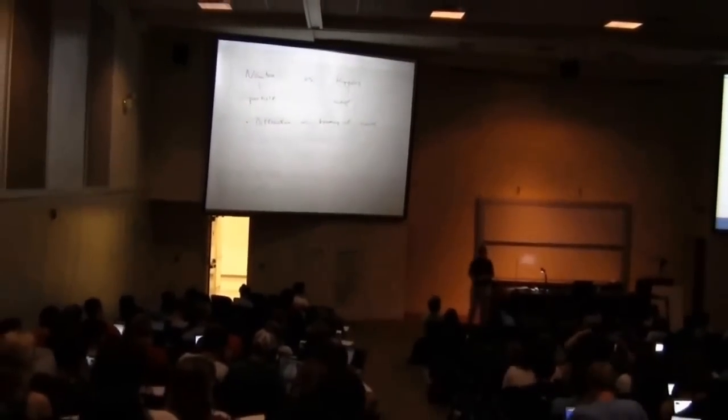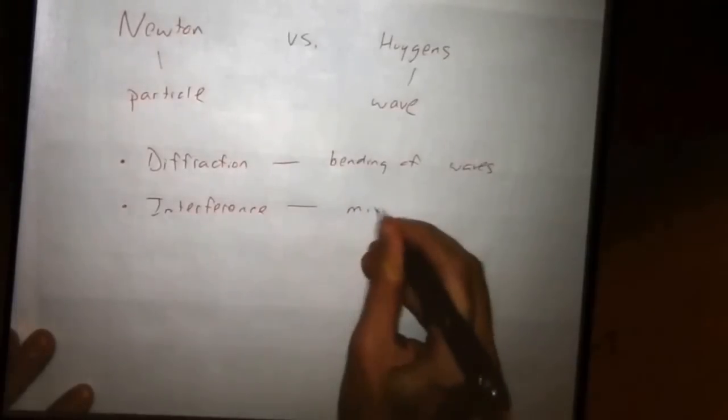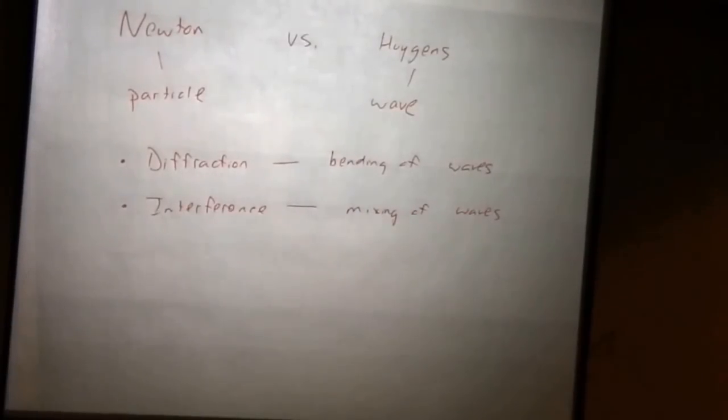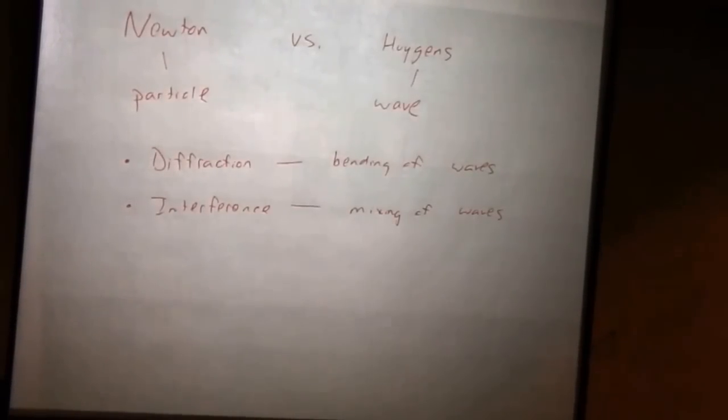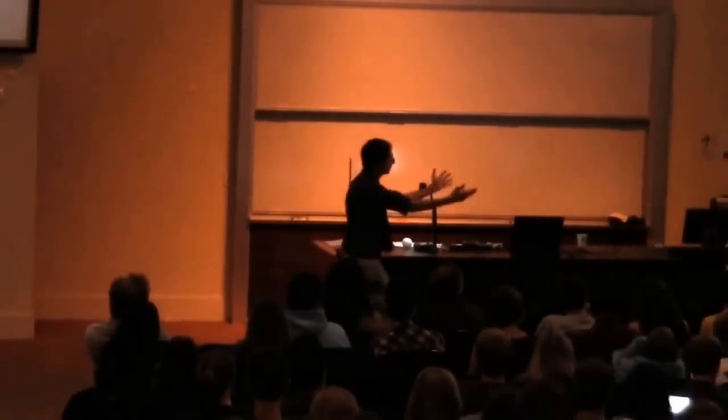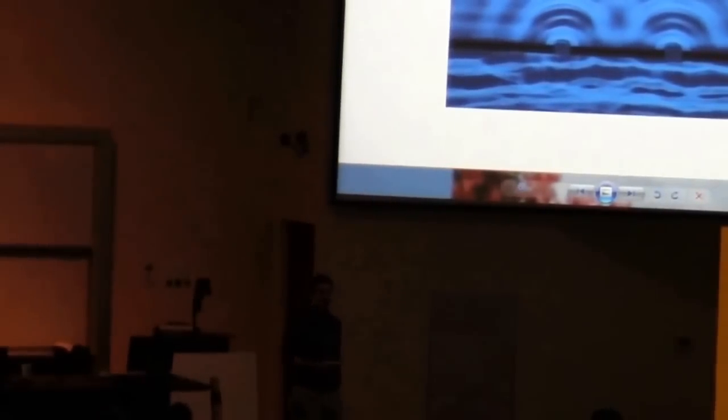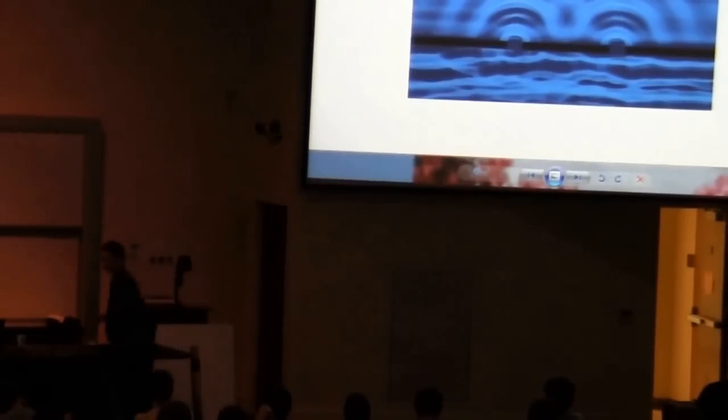According to that test, light is a wave. The next test is interference — the mixing of waves. At first, interference seems just like diffraction times two, but it gets pretty subtle and weird quickly. Here we have water waves coming against a boundary that now has two slits, each about the same size as the wavelength. You get two diffraction patterns that mix together and interfere with each other.